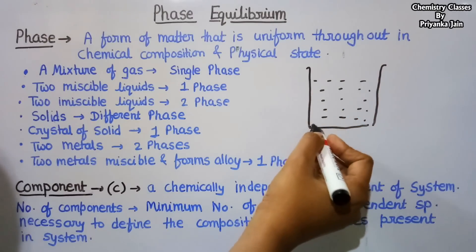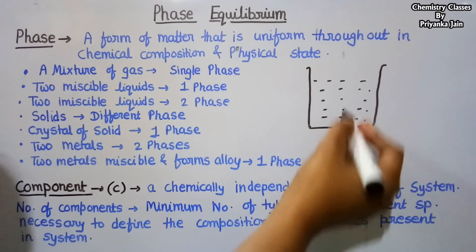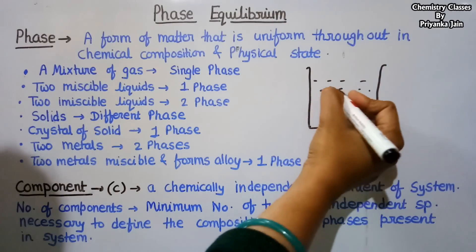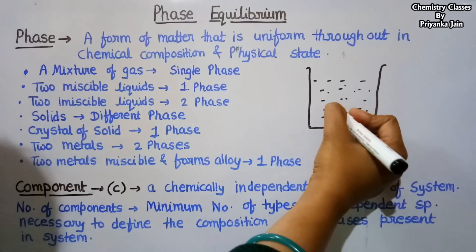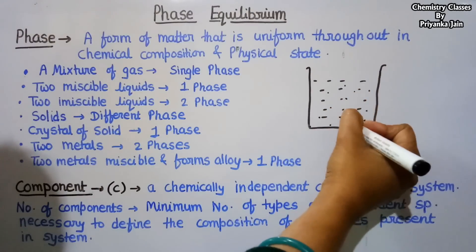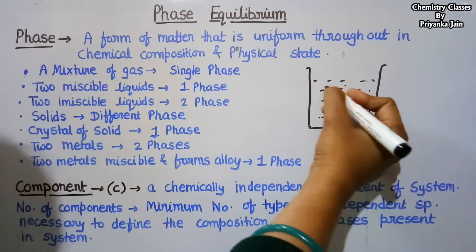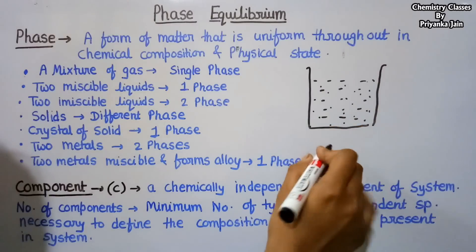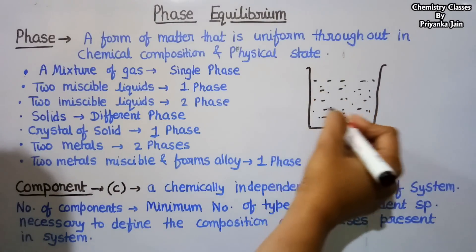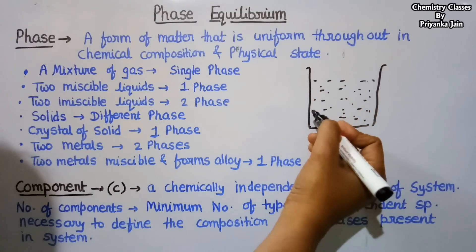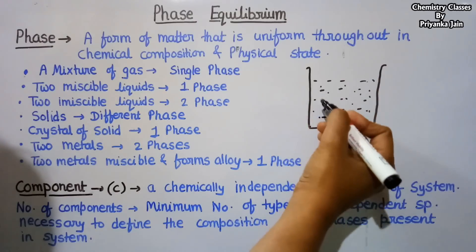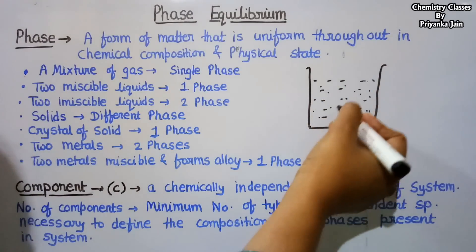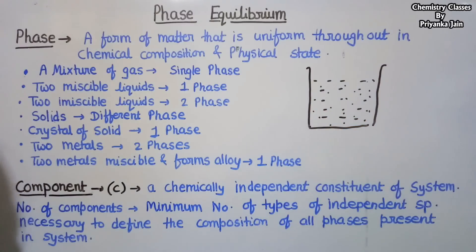Now if we add NaCl or sugar to this liquid water — if we add sugar, then after some time the sugar will get dissolved in the liquid water and it forms a homogeneous solution. The solution is homogeneous in all directions, so its physical state at all points is the same and its chemical composition at all points is also the same. So we will call this a single phase.